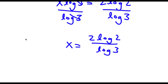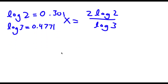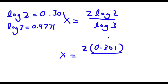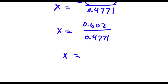The value of log 2 is 0.301 and log 3 is 0.4771. So I have 2 times 0.301 over 0.4771. That gives 0.602 over 0.4771, which equals approximately 1.26. So this is my answer.